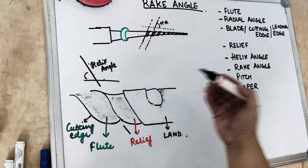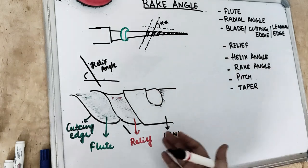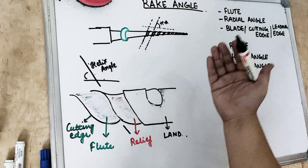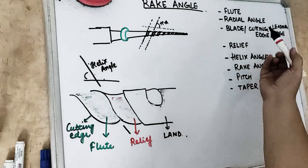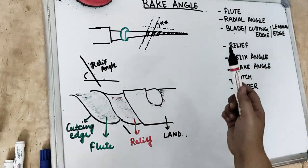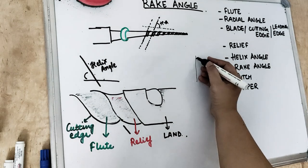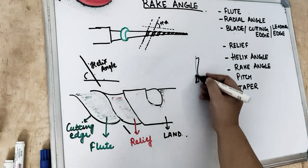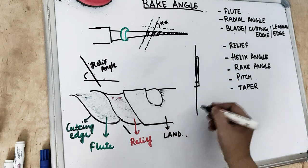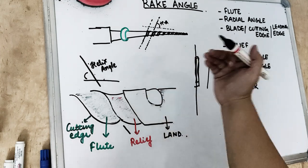Before starting with the rake angle, we should first familiarize ourselves with the other components of a file or a burr. Talking about the components of an endodontic file, we have flute, radial angle, and blade. The blade is the part which cuts — it cuts the surface, cuts the debris, and cuts the walls of the pulp. So the blade is the part which is doing the cutting.